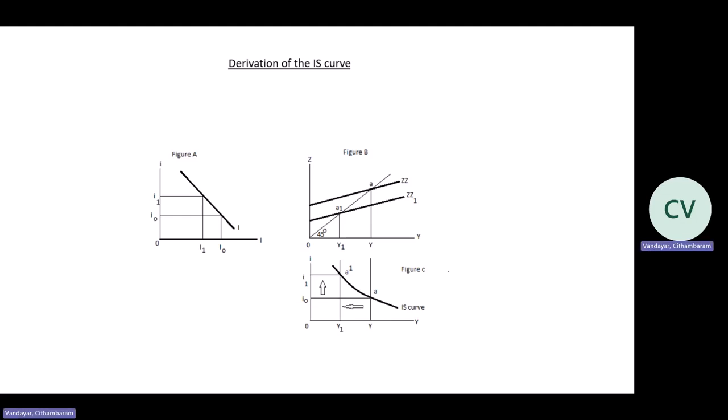We've got our two points on the IS curve. We can now repeat the same exercises by changing the interest rates to give us more points on the IS curve. This gives us a series of goods market equilibrium points that can be plotted in figure C, which ultimately gives us a more accurate figure of the IS curve.